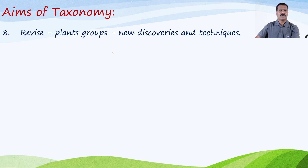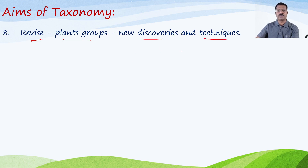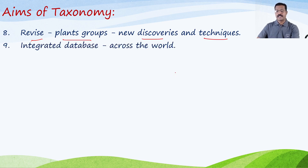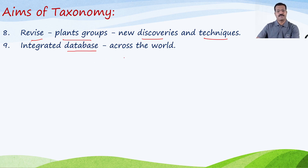Research is ongoing, and in the course of new research developments, whatever revision has to be done, and whatever newly discovered plants and new techniques exist, this branch has to provide such information. Then, to build an integrated database including all the species of plants across the world — whatever information is collected is a database, and this information from the breadth and length of the world has to be compiled and made ready for other branches.